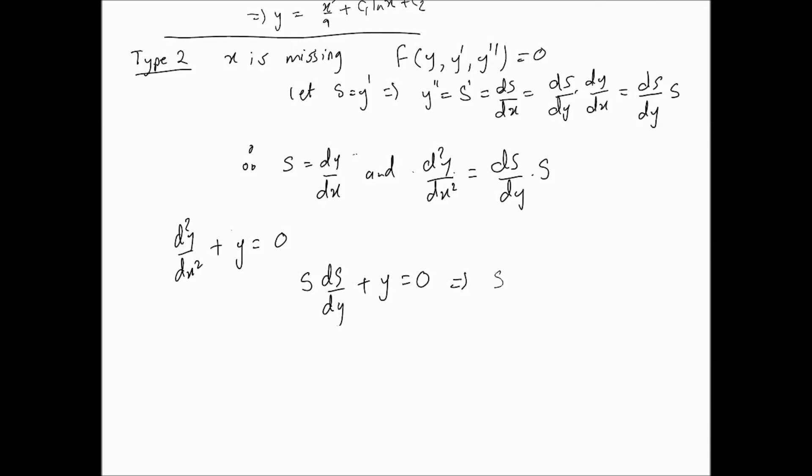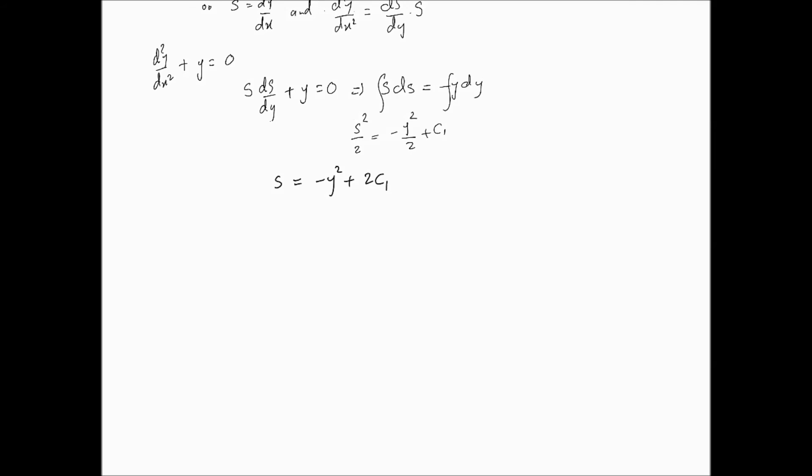This implies, this is a separable equation. So we can say s ds = -y dy. So then we integrate both sides. And that gives us s²/2 = -y²/2 + C₁. So 2C₁ is just another constant. So for simplicity, we'll say -y² + constant, let's say C₂.